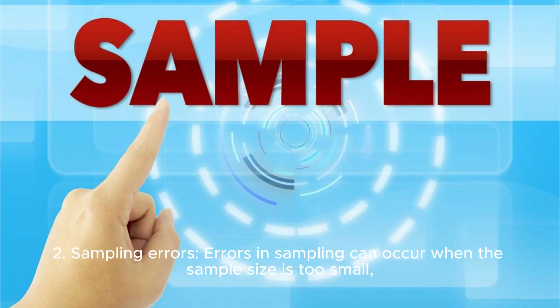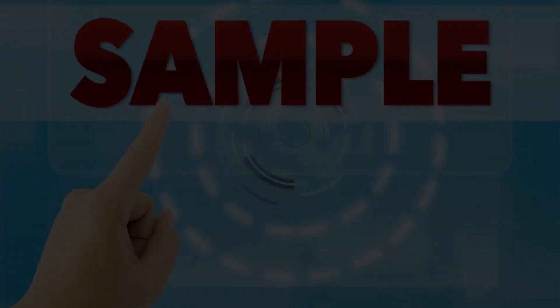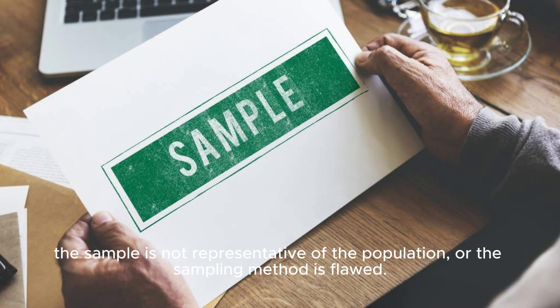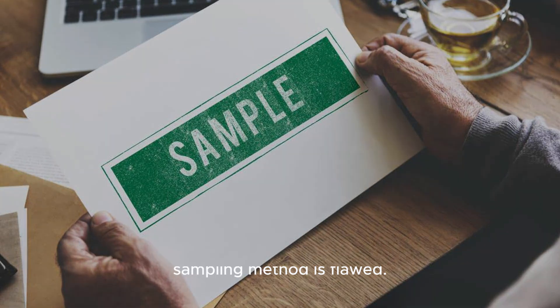Sampling errors. Errors in sampling can occur when the sample size is too small, the sample is not representative of the population, or the sampling method is flawed.